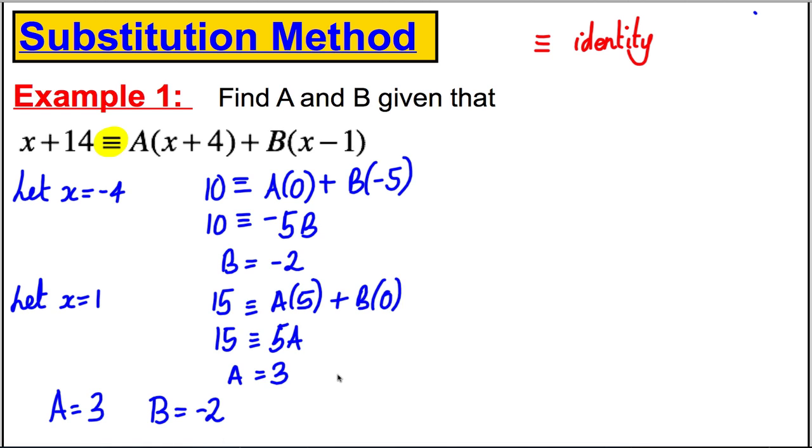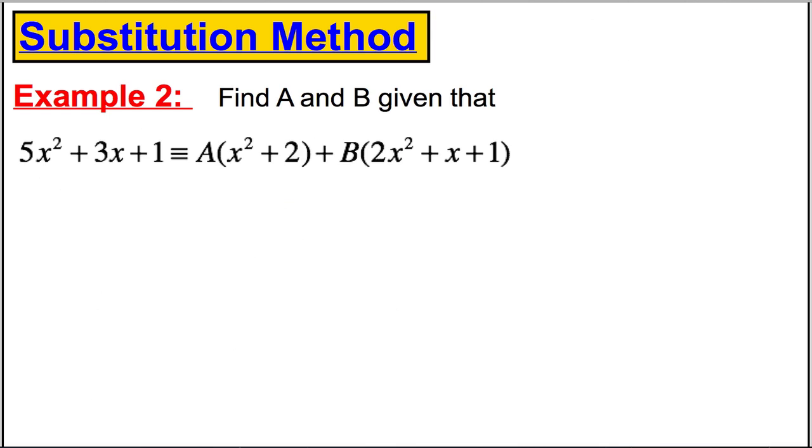And I could state that A is equal to 3 and B is equal to -2. And that is the substitution method. Let's try with one slightly more complicated example.